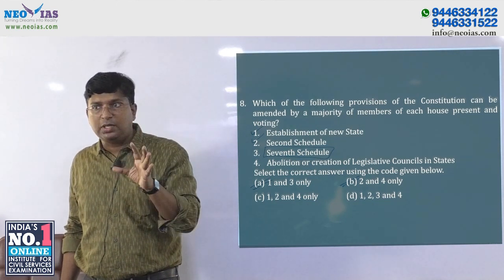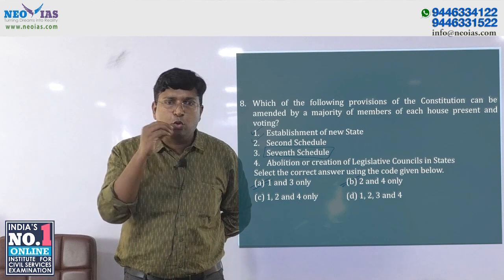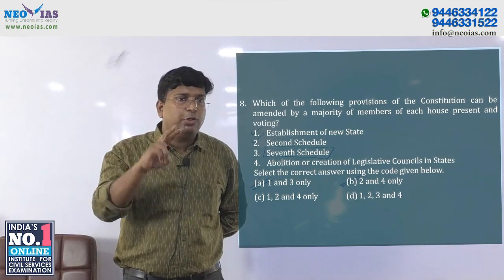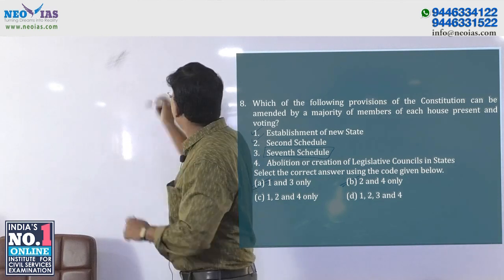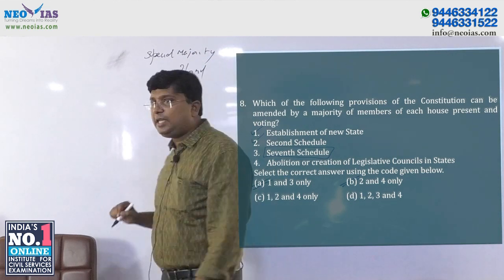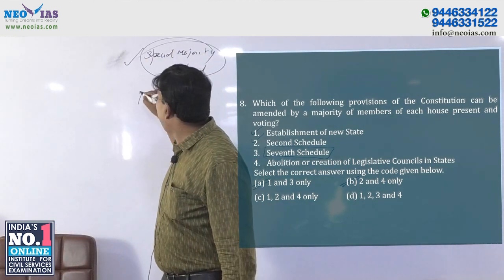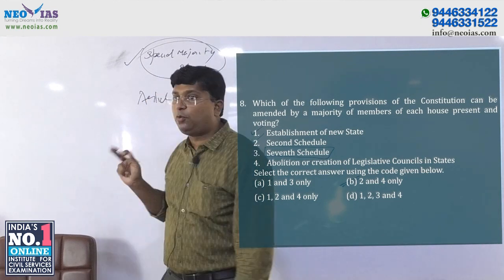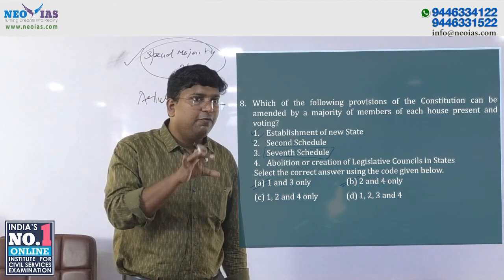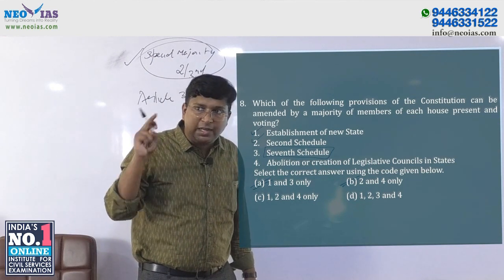When you do it through simple majority, we don't require a constitutional amendment bill. There are two types of constitutional amendment: one is special majority — two-thirds of members present and voting — and both houses have to pass it under Article 368. But if the constitution is going to amend anything which affects the federal system, that alone is not sufficient.